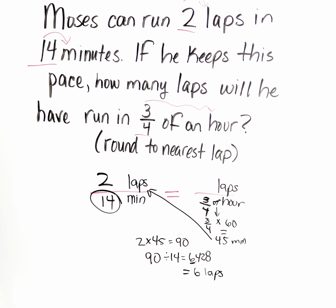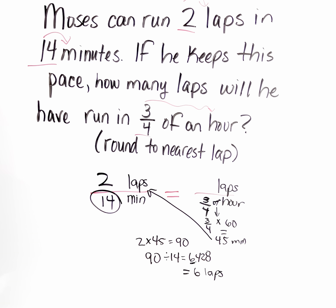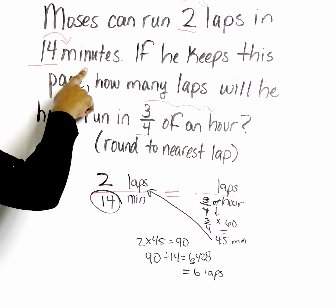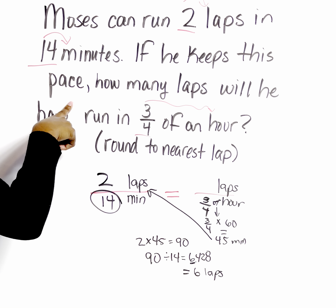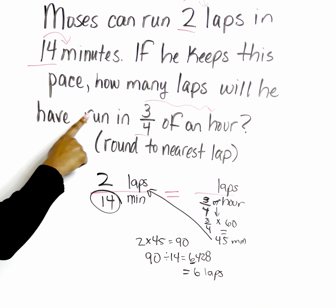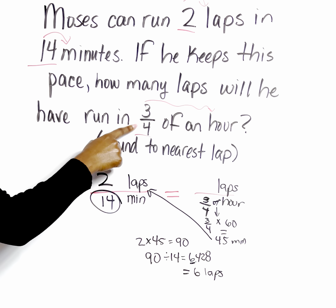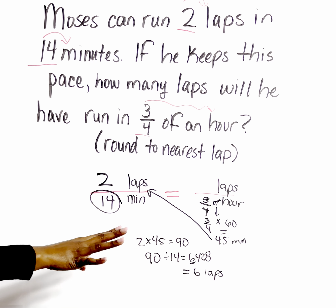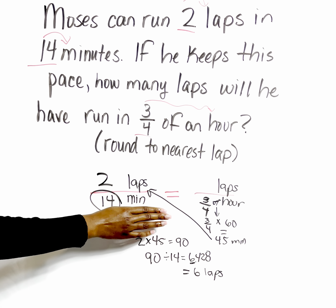The process is not going to change. Anytime I teach you how to keep something super simple, that process will remain no matter what they give us. So if we take a look at this question again from the top: Moses can run two laps in 14 minutes. If he keeps this pace, how many laps would he have run in three-fourths of an hour? What's your trigger? We're given three values and we're looking for a fourth, so that means we need to set up our ratios.